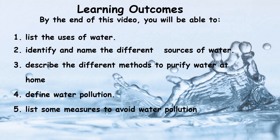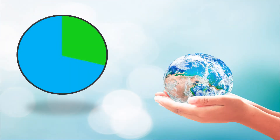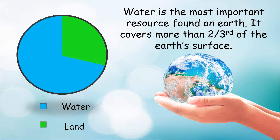As we know, water is the most important resource found on earth. It covers more than two-thirds of the earth's surface. Here the blue represents water and the green represents land.